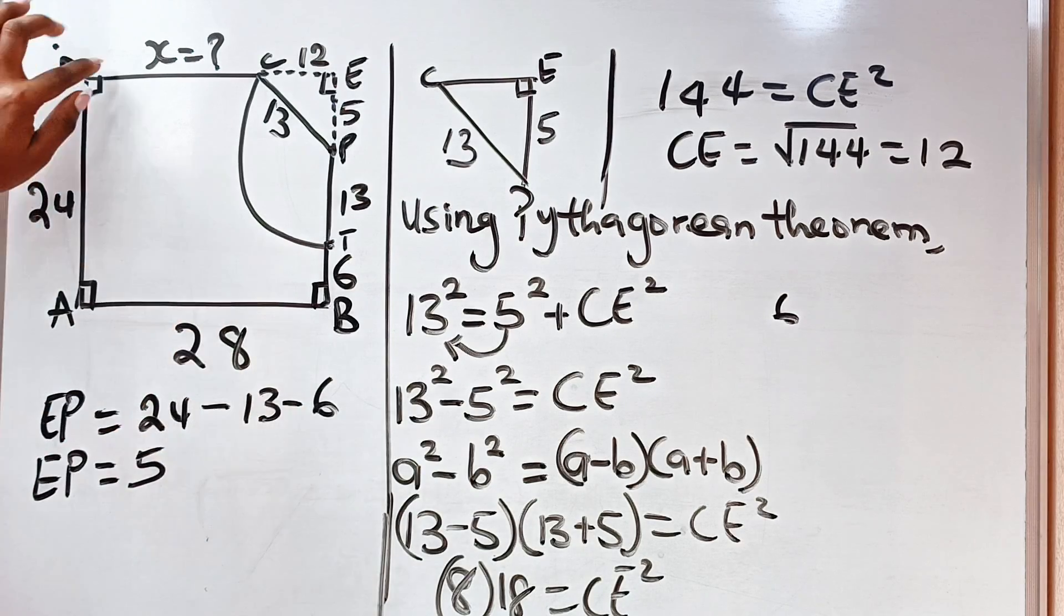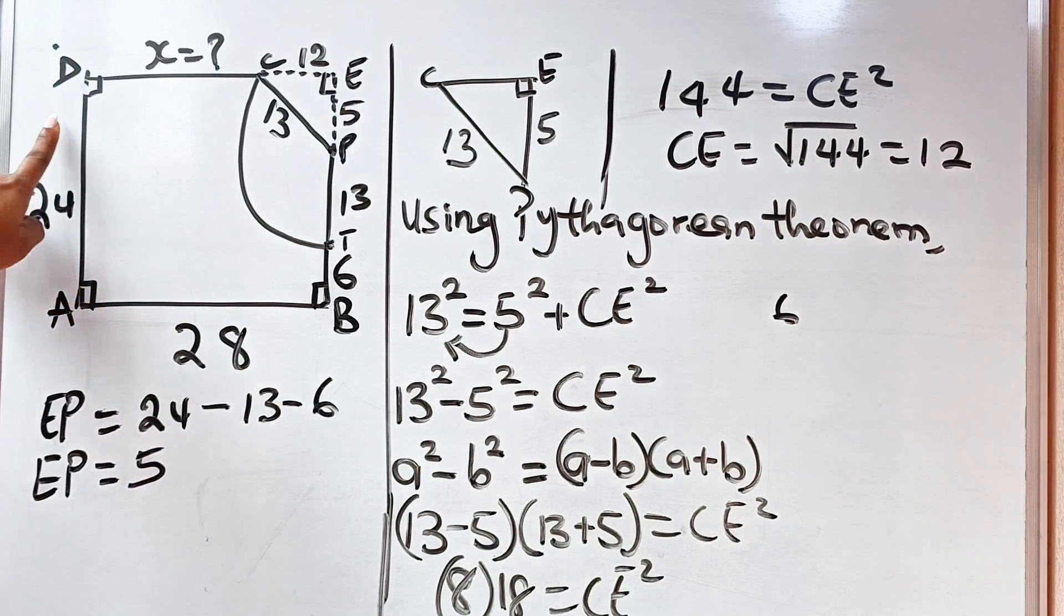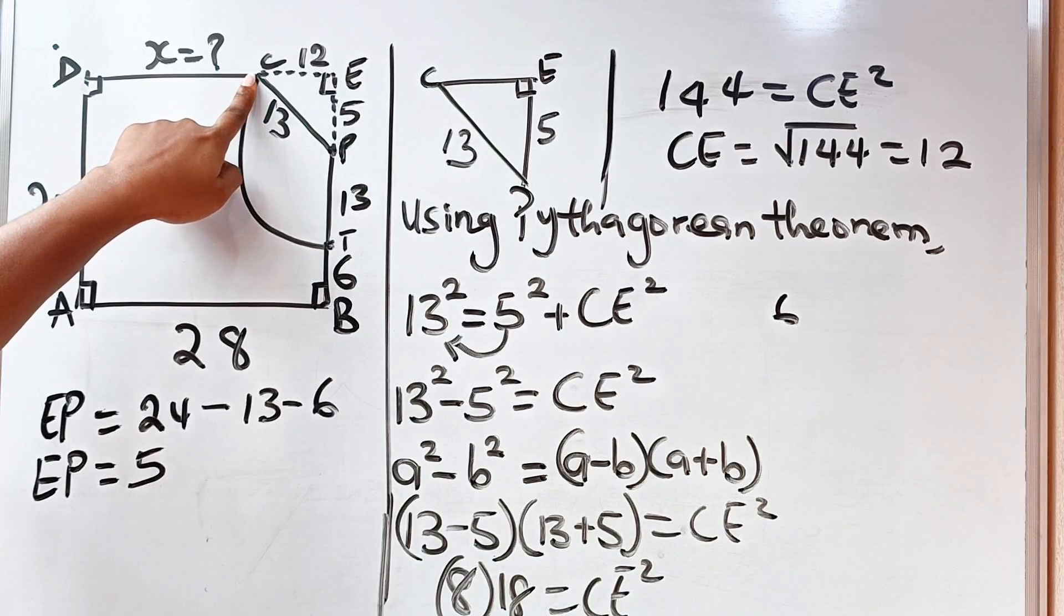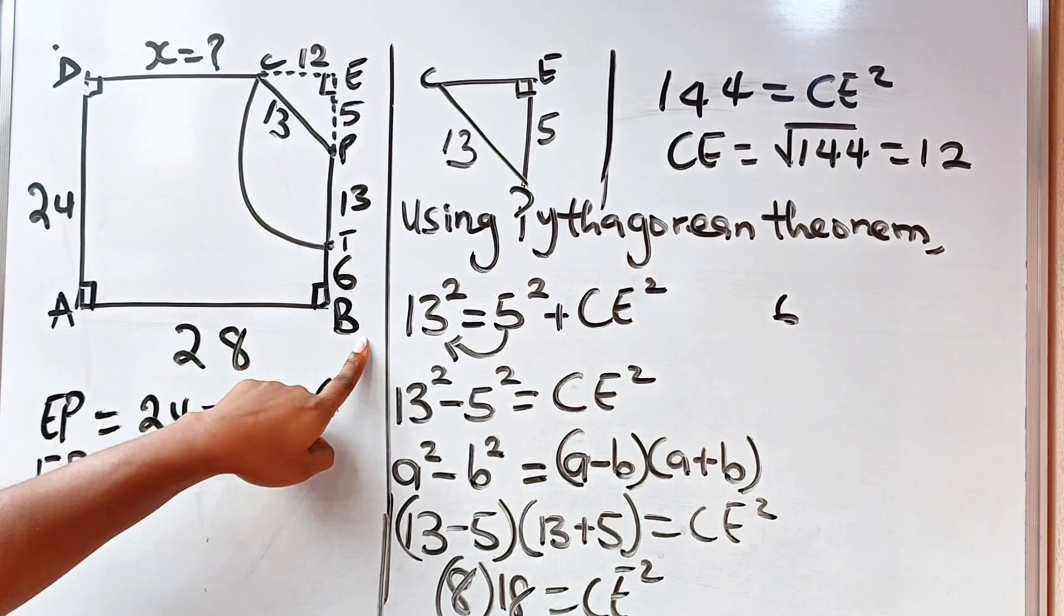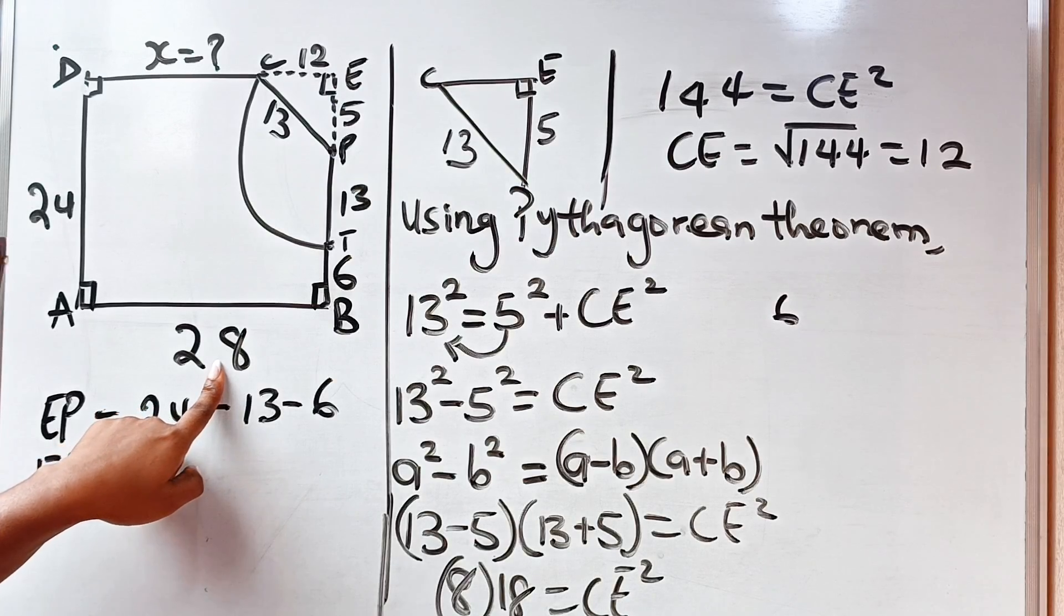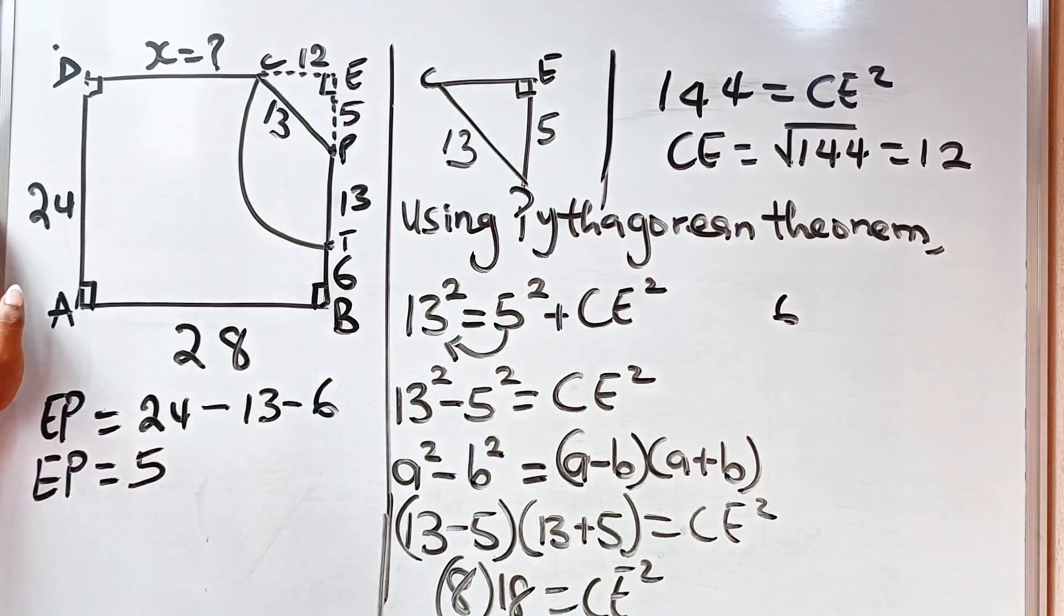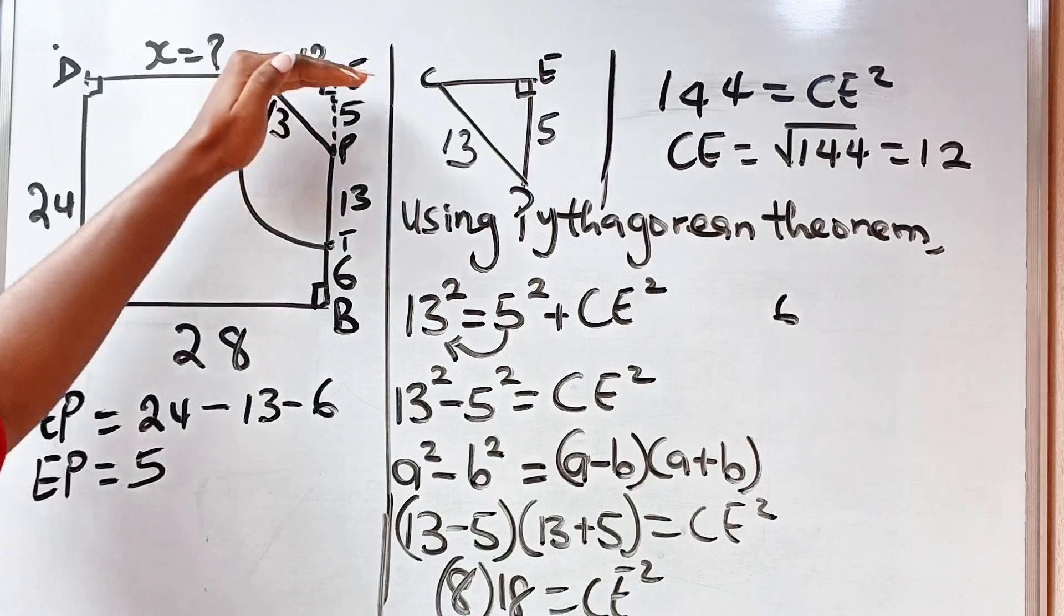Now remember the question says we should find x. So DC plus CE is equal to AB, which is 28, because this is obviously a rectangle, so this side is equal to this side.